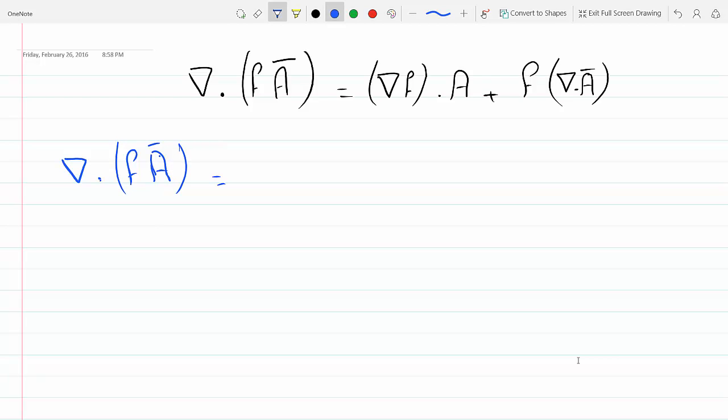Okay, so this is the divergence. By the definition, the divergence is d over dx of the function inside plus d over dy fA plus d over dz fA.